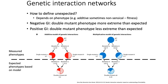In the additive model, suppose you're measuring cell viability and your wild type cells have a viability of 1.0. If mutation of gene A leads to a phenotype of 0.7 — an effect of negative 0.3 — and mutation of gene B led to a phenotype of 0.5 — an additive effect of negative 0.5 — then the predicted phenotype of your double mutant would be the sum of those two effects: minus 0.5 plus minus 0.3, giving an expected double mutant phenotype of 0.2.